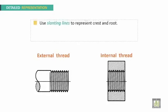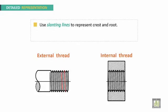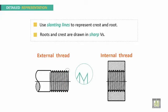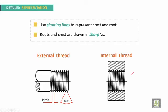For the detailed representation, slanting lines are used to represent crests and roots. Roots and crests are drawn in sharp V's. This is a detailed representation showing external thread and internal thread. The thread run-out appears in this region.